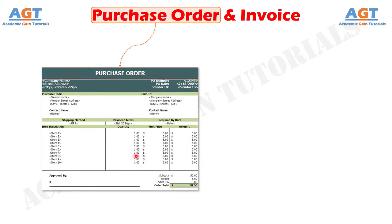Purchase order, or PO, is the first formal offer document created by the buyer and delivered to the seller with an aim of making a purchase. When the document is accepted by the seller, it becomes a legally binding contract between the two parties. It indicates the type, quality, quantity, and rate of the goods desired by the buyer.